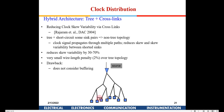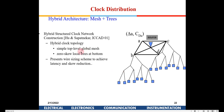This is known as a tree-plus cross-links topology. There are also hybrid architectures combining mesh plus trees. All of these topologies are supported by CAD tools — it is impossible to do this manually. Most modern tools have one or more of these architectures embedded, and depending on the application, an appropriate architecture is selected.